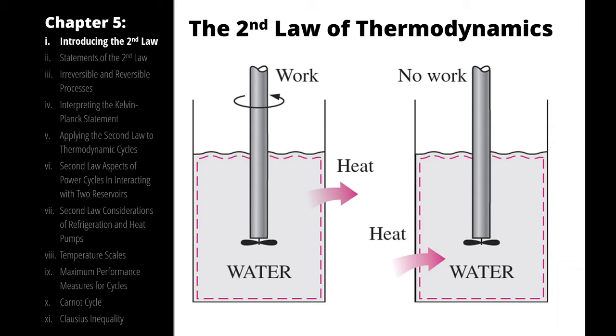For example, work is a higher quality energy than heat transfer, which means going from work to heat can happen for free. We could do that without, theoretically, losing any energy in the process. We have no irreversibilities.